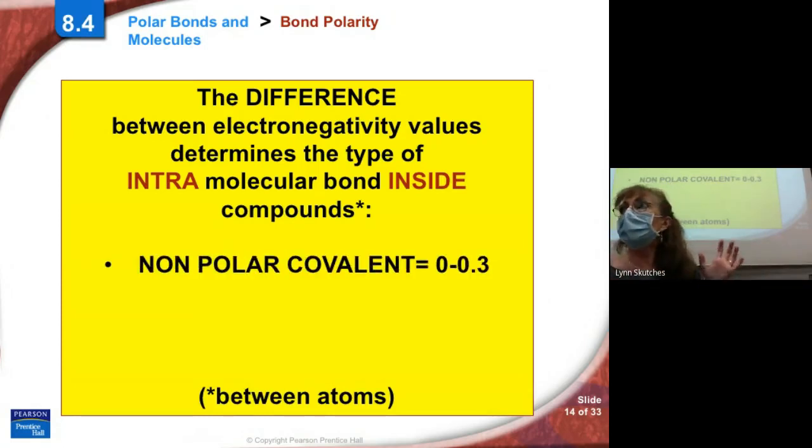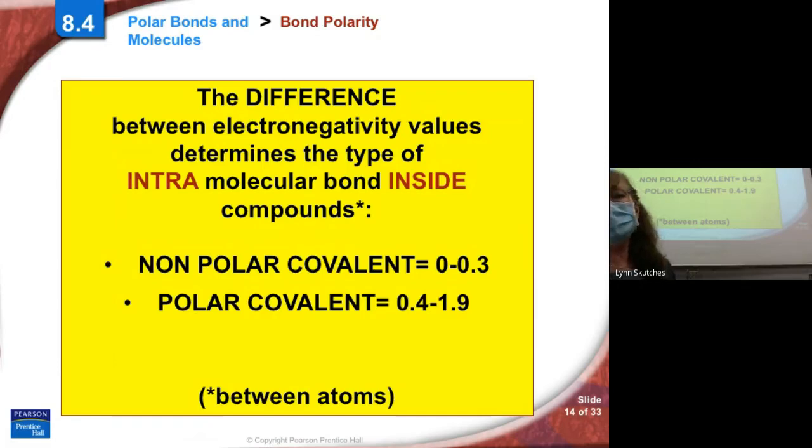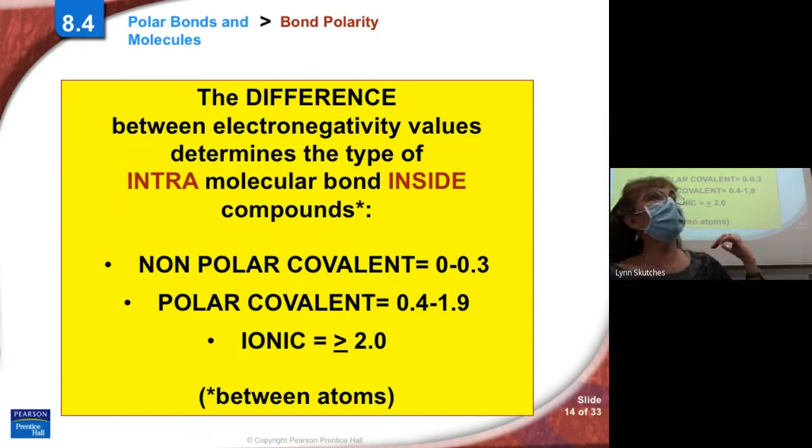And the values that we're going to use for our class, and you might get different ones in your college classes, but nonpolar covalent. Again, the covalent part is sharing valence electrons. Nonpolar covalent runs from 0 to 0.3 difference. Polar covalent is 0.4 to 1.9. Anything 2.0 or larger is considered an ionic bond.